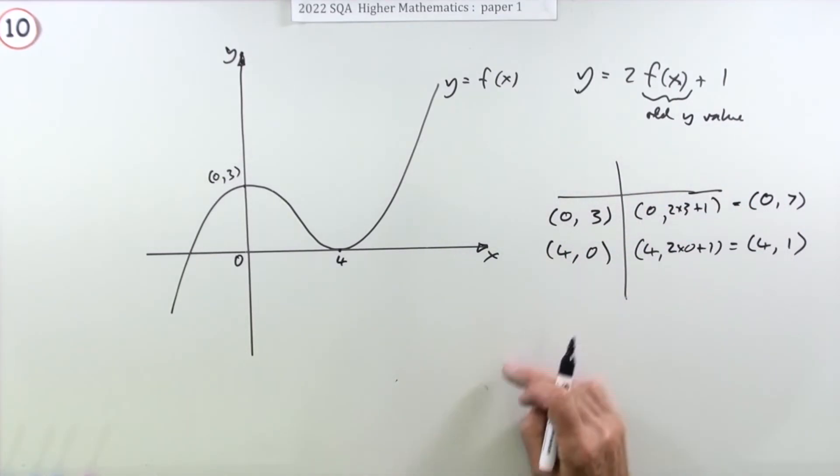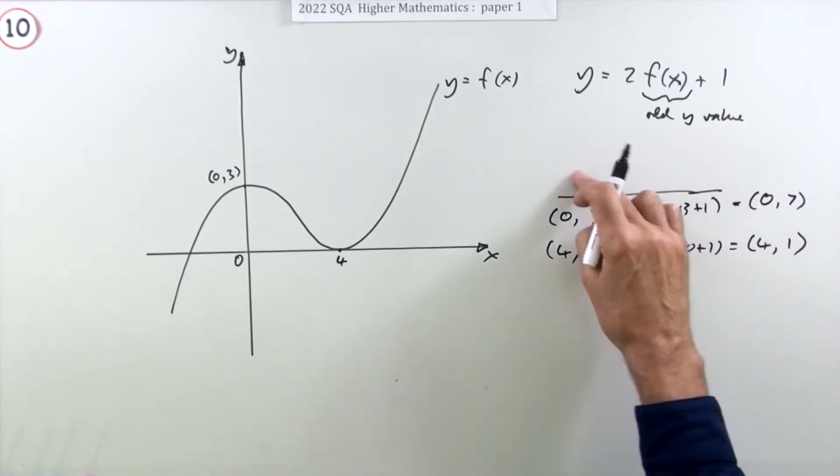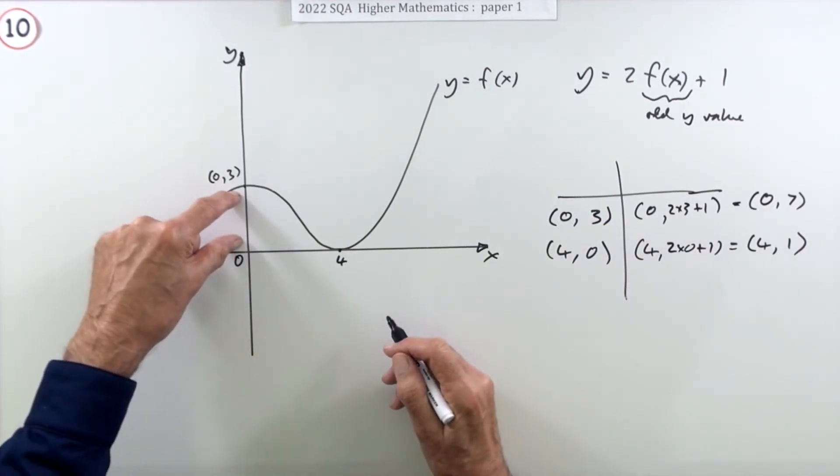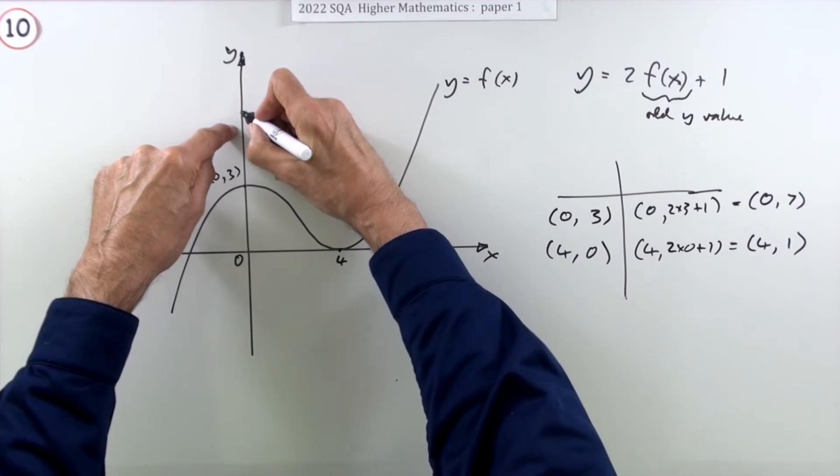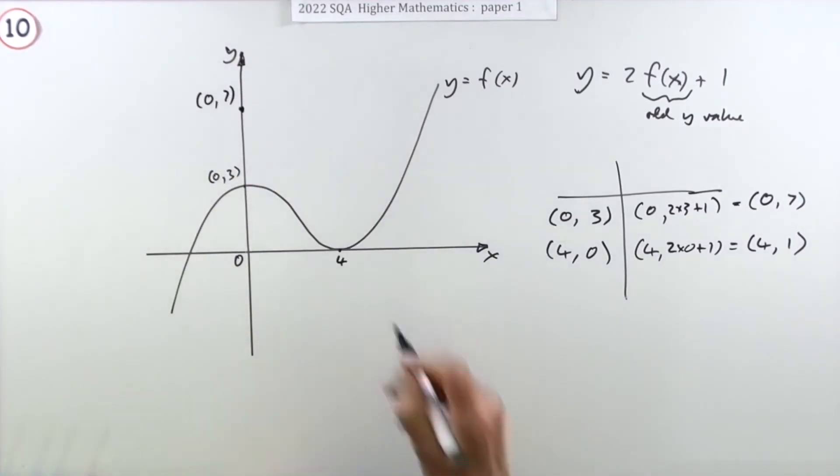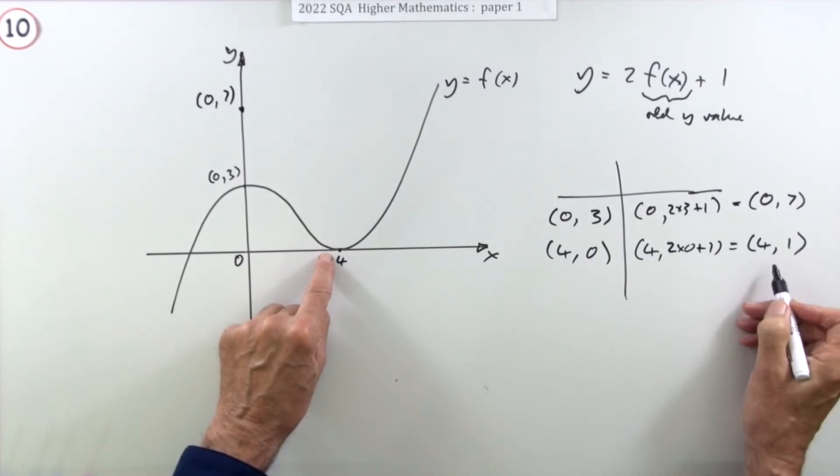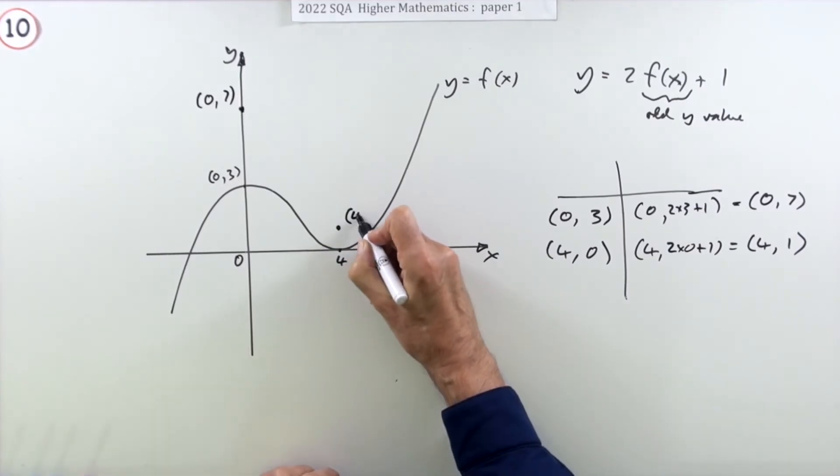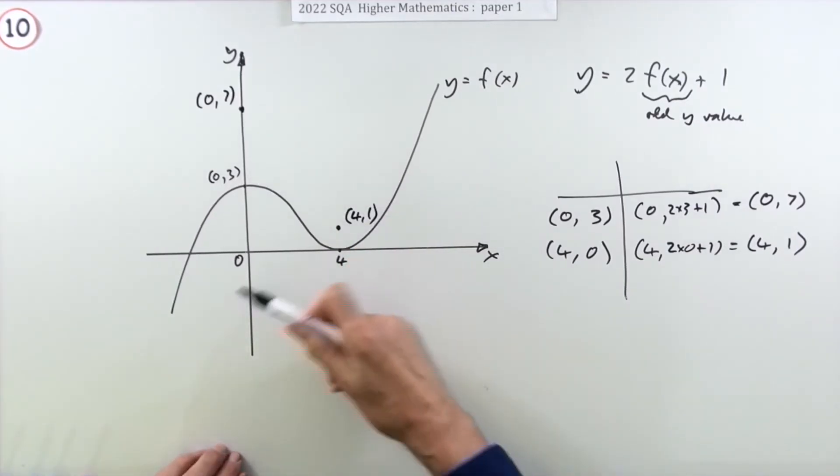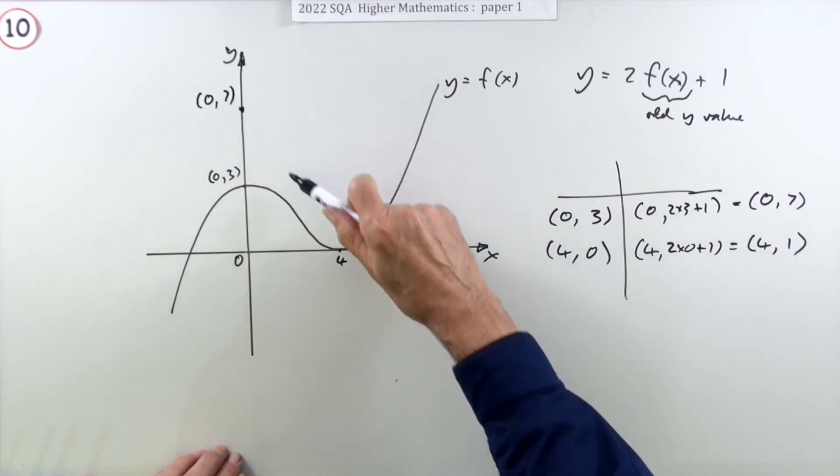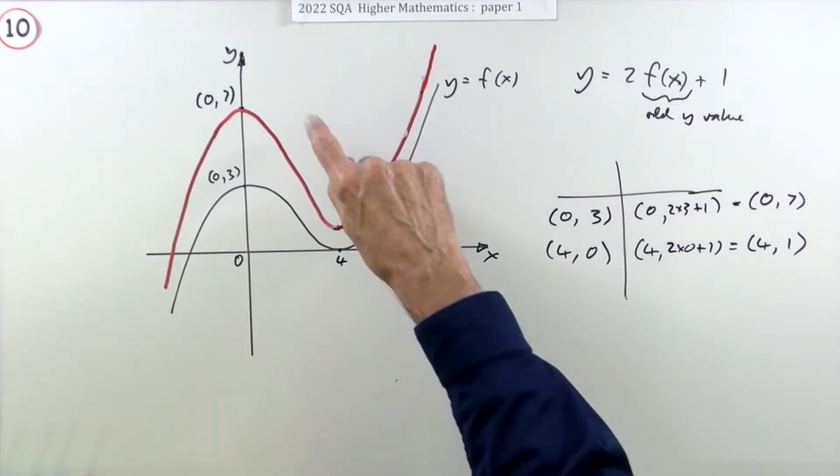Now you can put whatever names you like there, original point and image or point and image or even just put the function names down whatever you like. So zero three goes up to zero seven, so it'll be about here, put that in zero seven. Four zero goes up to four one so it's going to go to about there.